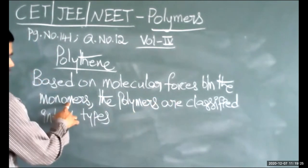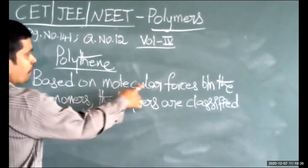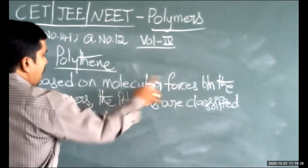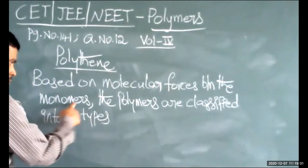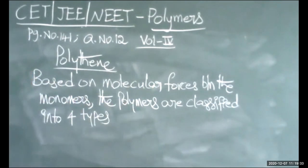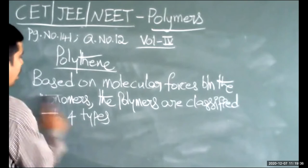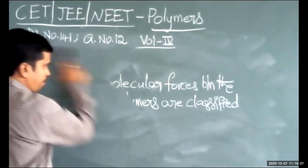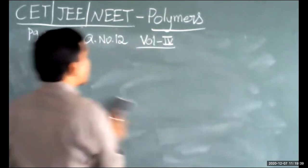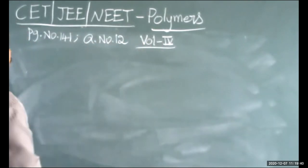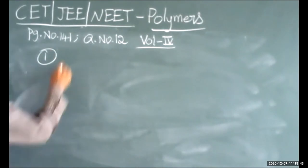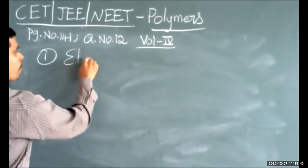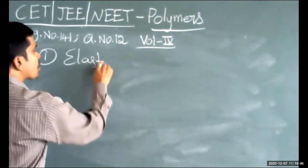Based on the molecular forces between monomers, polymers are classified into four types. The first type is elastomers.